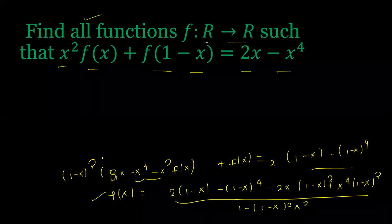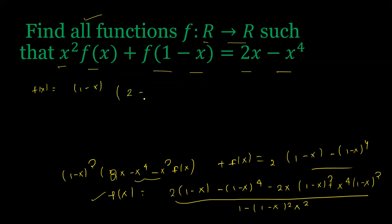Here we will simplify this. f(x) has (1-x) as common factor. 2 minus (1-x)³, and here this quantity. I have the formula a² - b² = (a+b)(a-b).